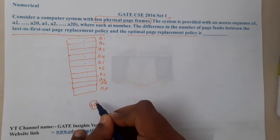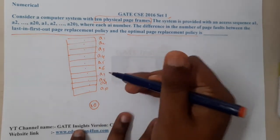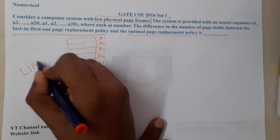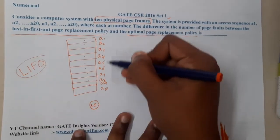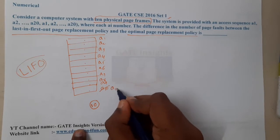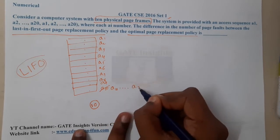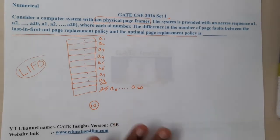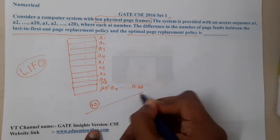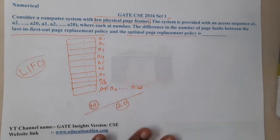Once a11 wants to come in, among all pages currently loaded, whoever came last is replaced — that is LIFO. So a10 came last, so we replace a10 with a11, and so on up to a20. So the total number of faults up to a20 will be 20.